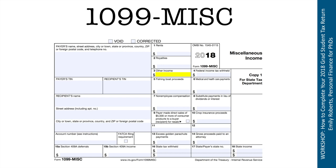Now, if you do have a 1099 miscellaneous with box seven income, that means you were hired as a contractor or are self-employed, and you probably negotiated and know exactly why that happened. If for some reason you receive a 1099 miscellaneous with box seven income and you're not sure what's going on and you think it's for your role as a graduate student, check up on that because it's possible that a mistake has been made.